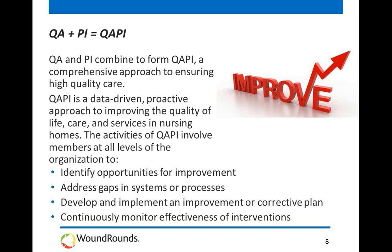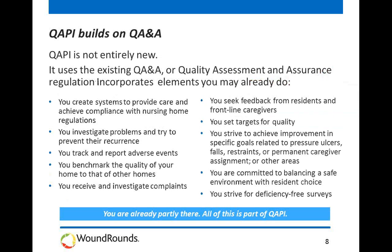QAPI is quality assurance combined with performance improvement — QA plus PI is QAPI. By engaging all team members at all levels of resident care, getting residents and families involved, and using the data available to us, we can take a more proactive approach to improvement. Team members will work to identify opportunities for improvement, address gaps in systems or processes, develop and implement improvement or corrective plans, and continuously monitor what is working so that the plan can be adjusted and moved to another goal.